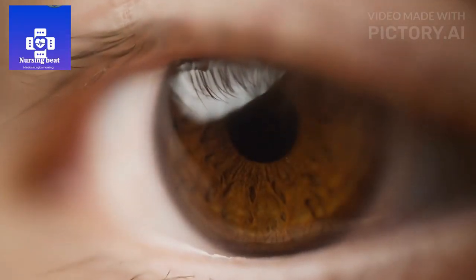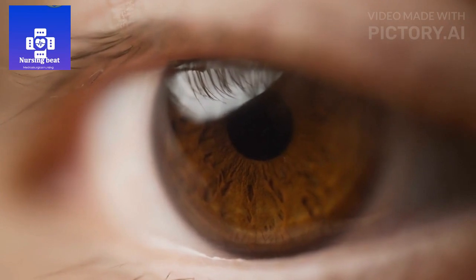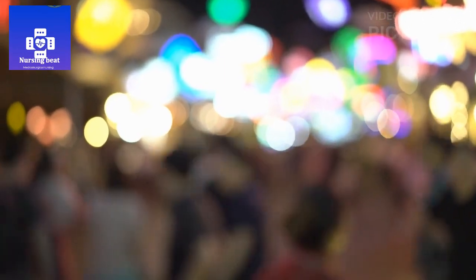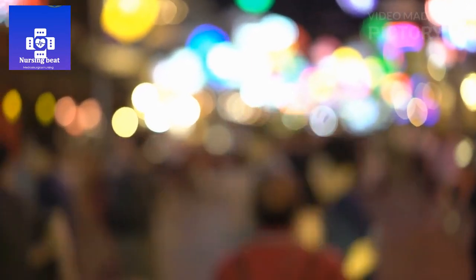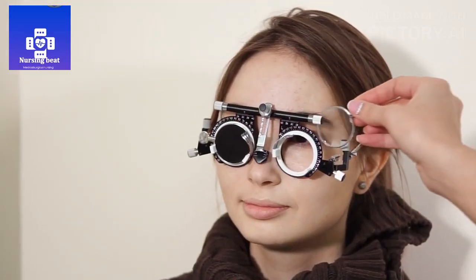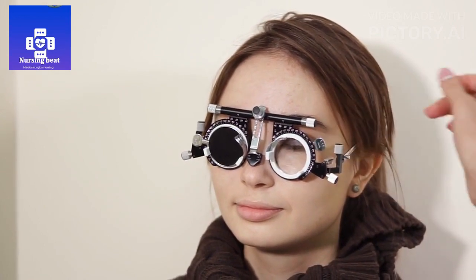3. Dark or empty areas in vision. Parts of the visual field might be missing or appear dark. 4. Difficulty seeing at night. Night vision might be compromised. 5. Vision changes. Vision might fluctuate or change from day to day.